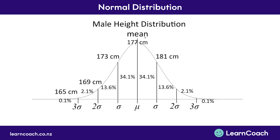The same thing happens on the other side. Because it's one standard deviation — 4 centimeters away from the mean — another 34% of people are between 177 and 181 centimeters tall. 13.6% of people are between 181 and 185 centimeters. 2.1% of people are between 185 and 189 centimeters. And 0.1% of people are above 189 centimeters.